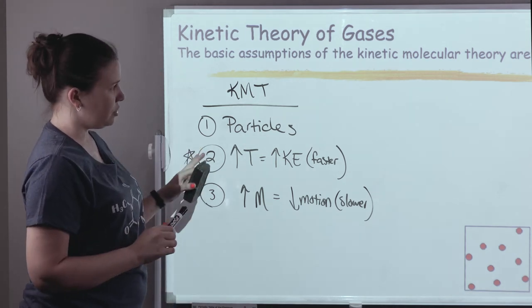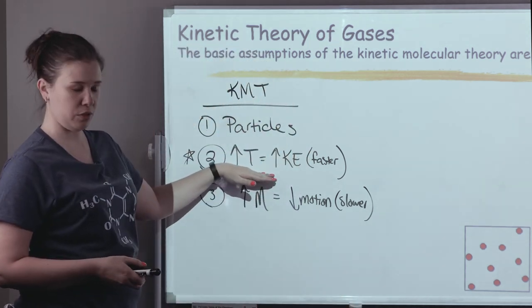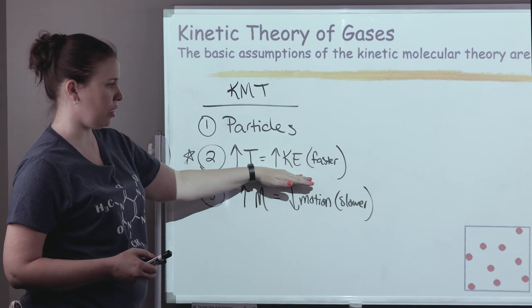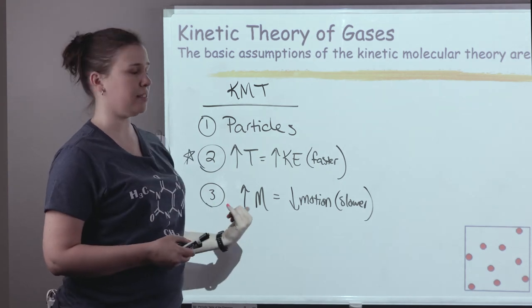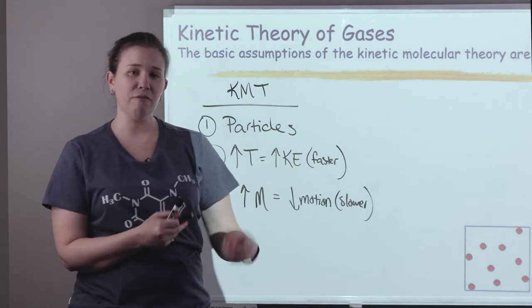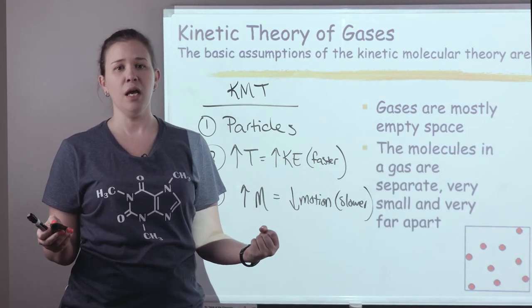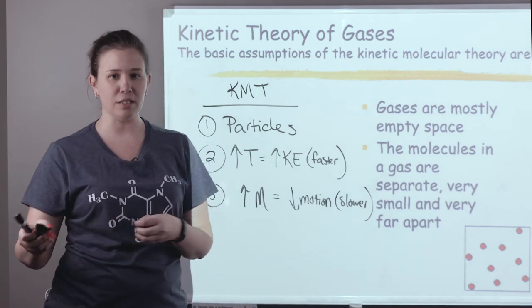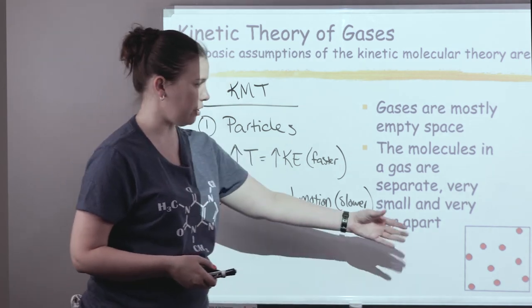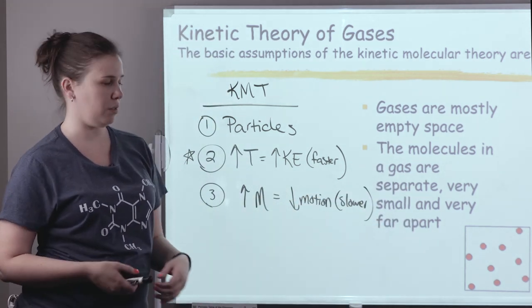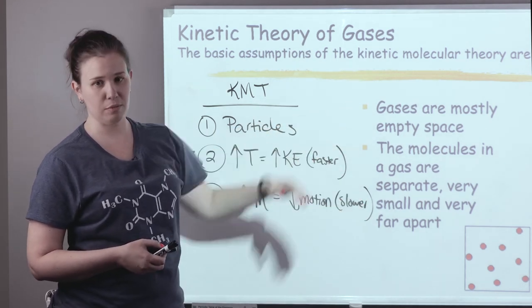We're going to look at these postulates specifically as they apply for gases. Focusing on the one we started with back in unit one: if I increase the temperature, I increase the kinetic energy. So that would make gases the most energetic substance existing at the highest temperatures. Those crazy fast particles are going to be very far apart, leading to the particles being mostly empty space, and they're also going to be very small and separate. So most of the volume would be not particles — the white space would be more of the volume than the red space.